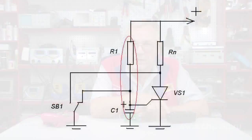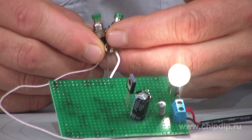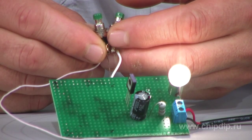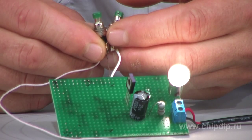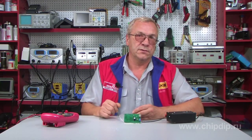To turn the thyristor on, press the button. In this case, the load is connected to a power source. Capacitor C1 is charged through resistor R1. The charge rate is determined by the R1-C1 time constant. When the button is released, the capacitor discharges to the thyristor gate.